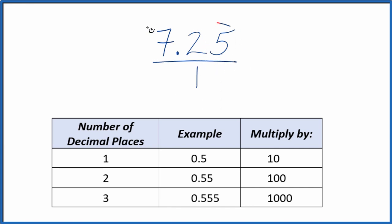What we need to do is get the numerator to be a whole number. Since we have two decimal places here, we can multiply that by 100. So we multiply 7.25 times 100, we end up with 725. And that's our whole number.